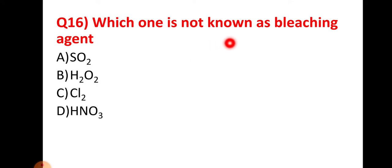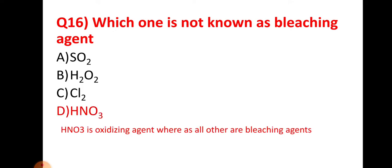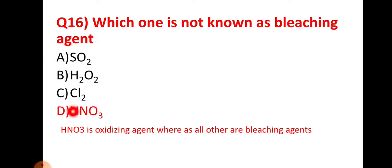Question number sixteen: which one is NOT a bleaching agent? You must know the list of bleaching agents. HNO3 is not a bleaching agent — it is an oxidizing agent — whereas SO2, H2O2, and Cl2 are all bleaching agents. So the right answer is HNO3.